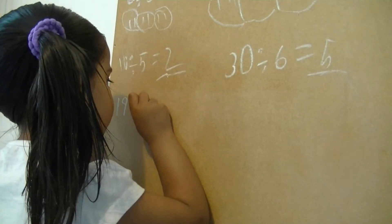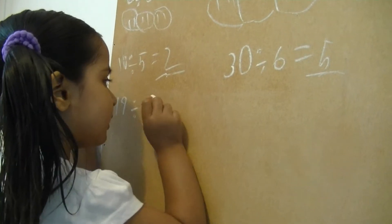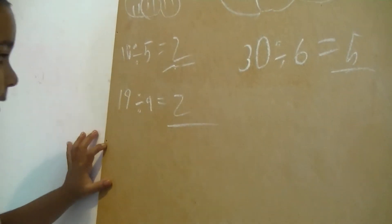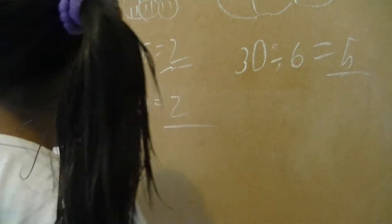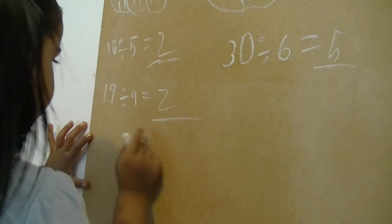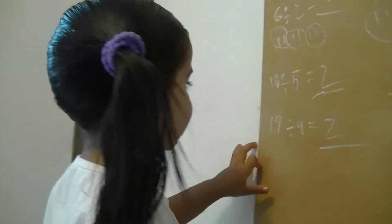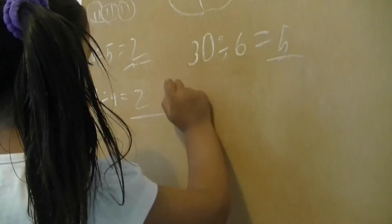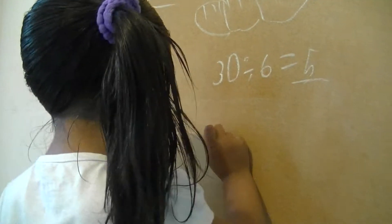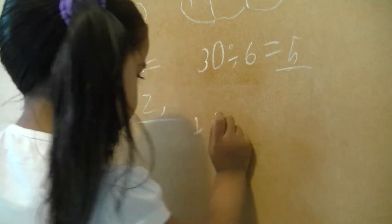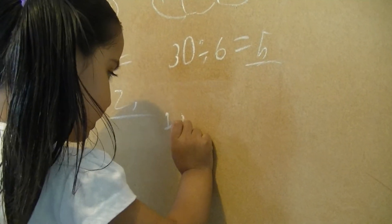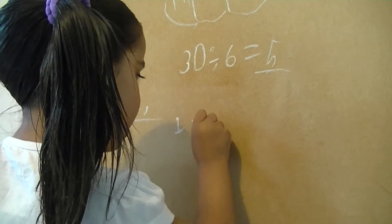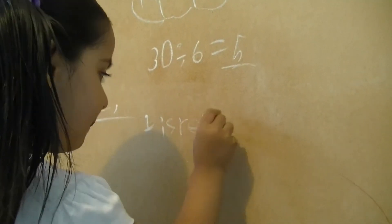Nine times two makes eighteen. I can't explain fully, but because two times nine makes eighteen, the nearest number is eighteen. So one is the remainder.